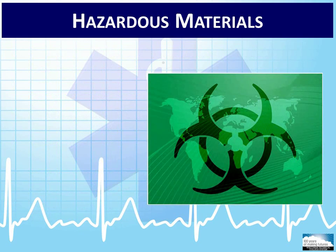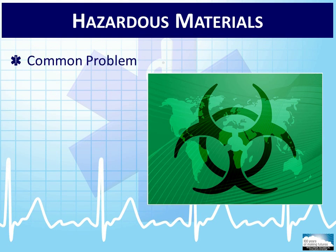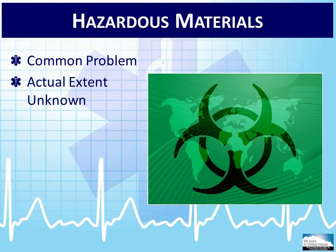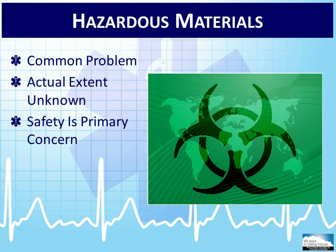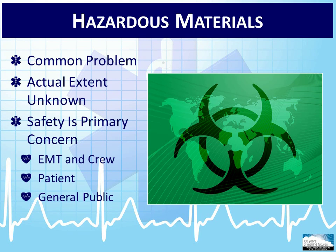Hazardous materials can be found everywhere. They are shipped around the world every day on trucks, airplanes, ships, and railcars. The average household has numerous chemical agents used for cleaning and other household needs. They are so common that it is really just a matter of time before you will encounter a hazardous materials incident. Even though the transportation of hazardous materials is highly regulated, the actual extent of these materials moved across our communities is unknown because placarding is required only when the materials being transported reach a certain threshold amount. Safety must always remain the EMT's primary concern — safety for our crews, patients, and the general public — requiring us to slow down our approach to hazardous materials scenes and identify crucial visual indicators.